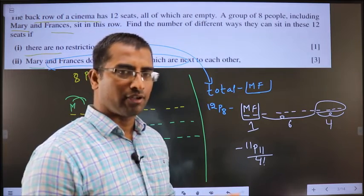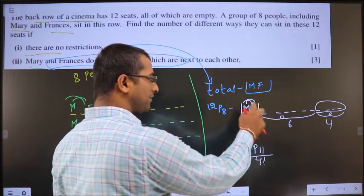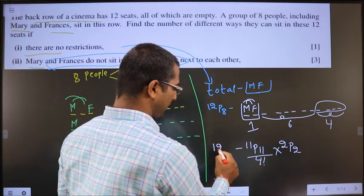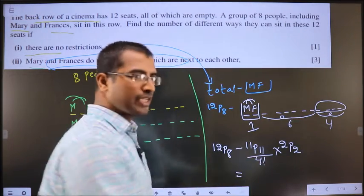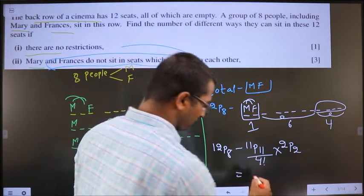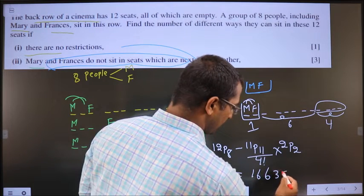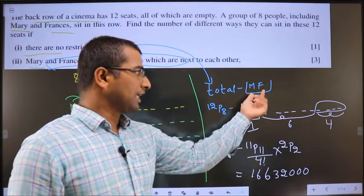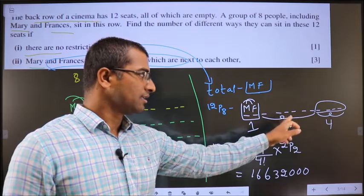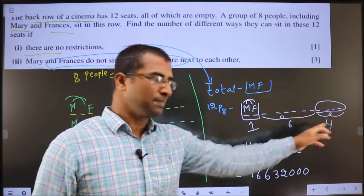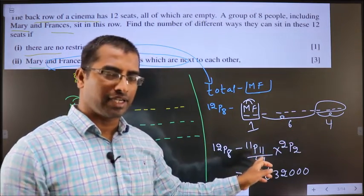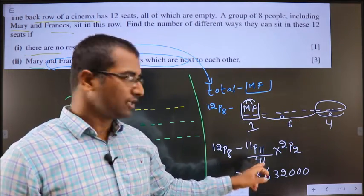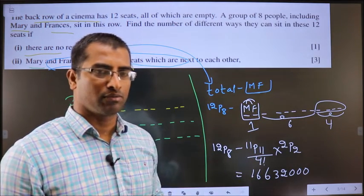Also, inside the Mary-Frances unit, these 2 can shuffle in 2P2 ways. So the answer is 12P8 minus (11P11 / 4! × 2P2). Putting this in the calculator gives 1,663,200. Summary: whenever items must be together, consider them one unit; with 6 other people and 4 empty spaces that gives 11 objects, shuffle in 11P11 divided by 4!, and multiply by 2P2 for internal shuffling.